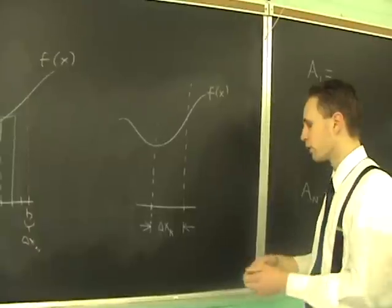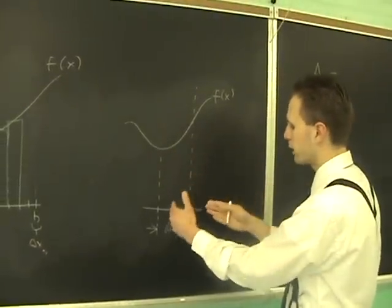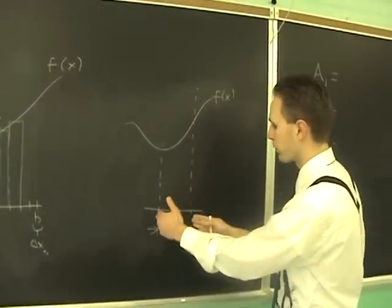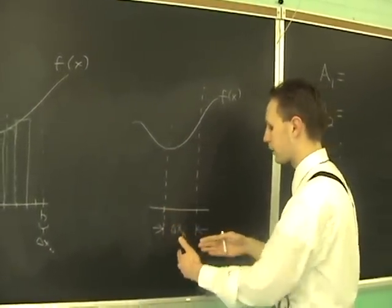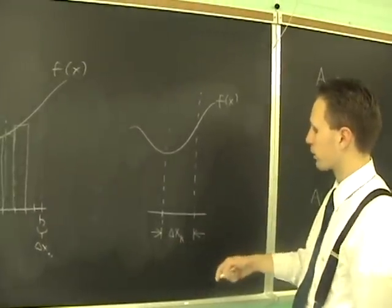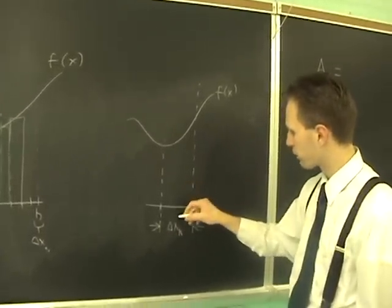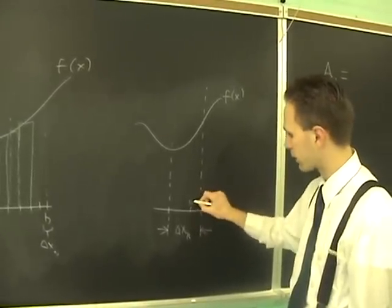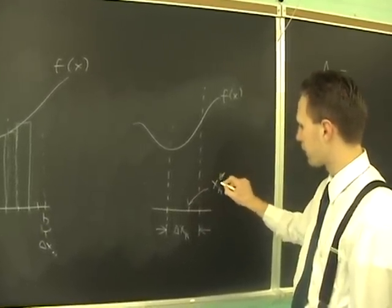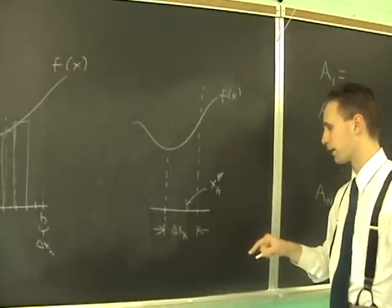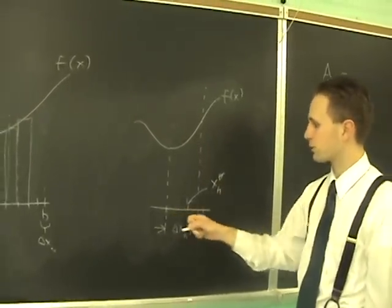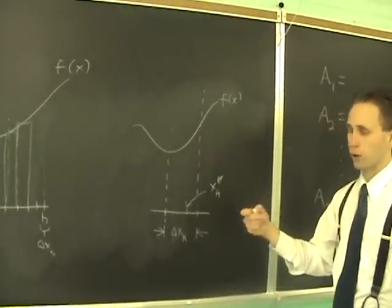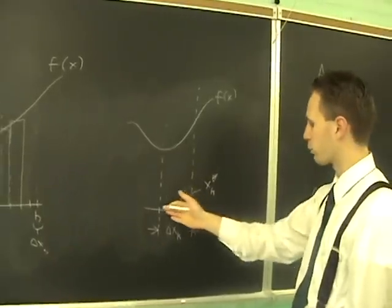The question is, how do you determine the dimensions of these rectangles? Let's take a typical strip. The width of each strip is delta xk. The height of each strip—you have to pick an x value inside here. It doesn't matter where it is; I'll call it xk star.